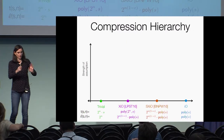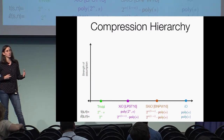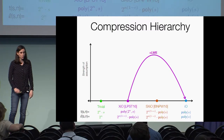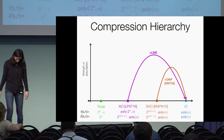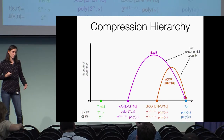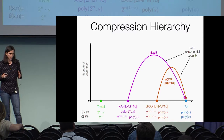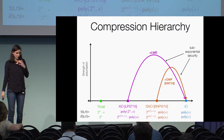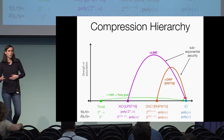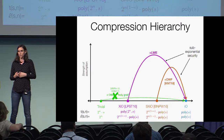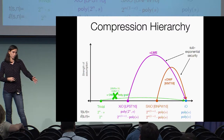Parametrizing obfuscation, these four settings of parameters give us a compression hierarchy for compressing obfuscation based on known results. For example, XIO along with LWE is already known to imply IO. If we are willing to strengthen the assumption from XIO to SXIO, we can weaken the assumption from LWE down to only one-way functions. However, both of these constructions are in the sub-exponential regime, meaning they require sub-exponential security from the underlying primitives. So one thing we can already ask is what can we get from these primitives with only polynomial security? For comparison, the holy grail would be to base IO on something like one-way functions, but based on known impossibility results — such as the impossibilities of Mahmoodi et al. and Garg et al. — this is very unlikely.